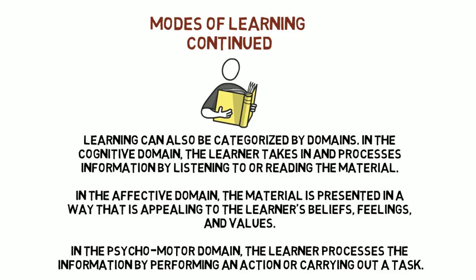Learning can also be categorized by domains. In the cognitive domain, the learner takes in and processes information by listening to or reading the material. In the affective domain, the material is presented in a way that is appealing to the learner's beliefs, feelings, and values. In the psychomotor domain, the learner processes the information by performing an action or carrying out a task.